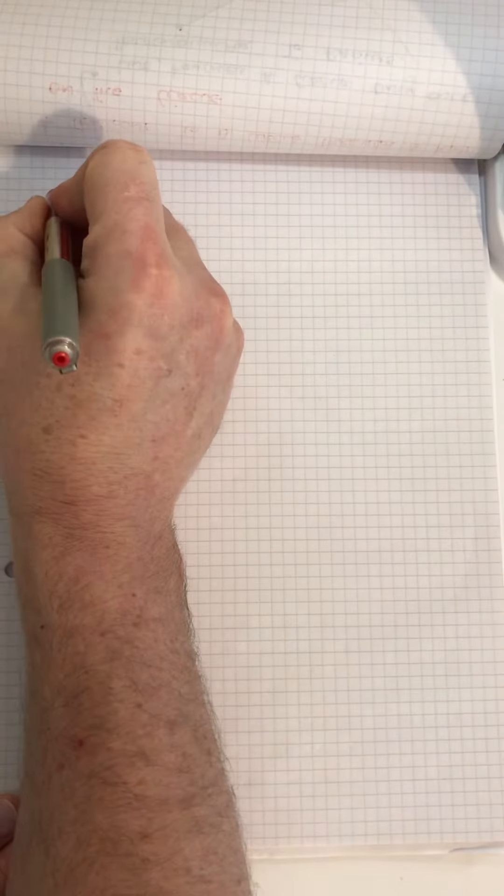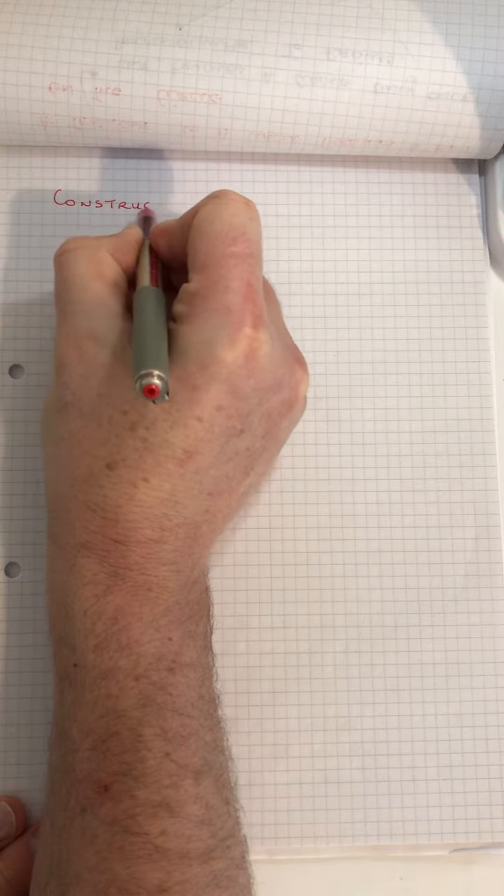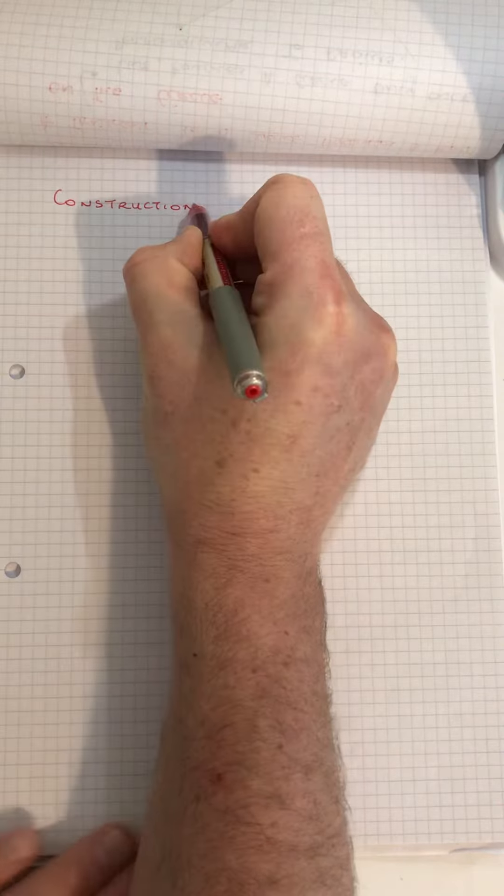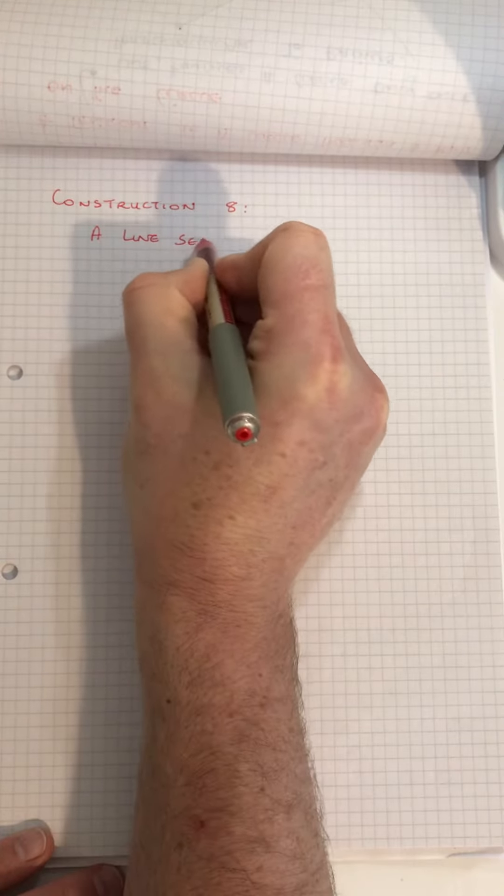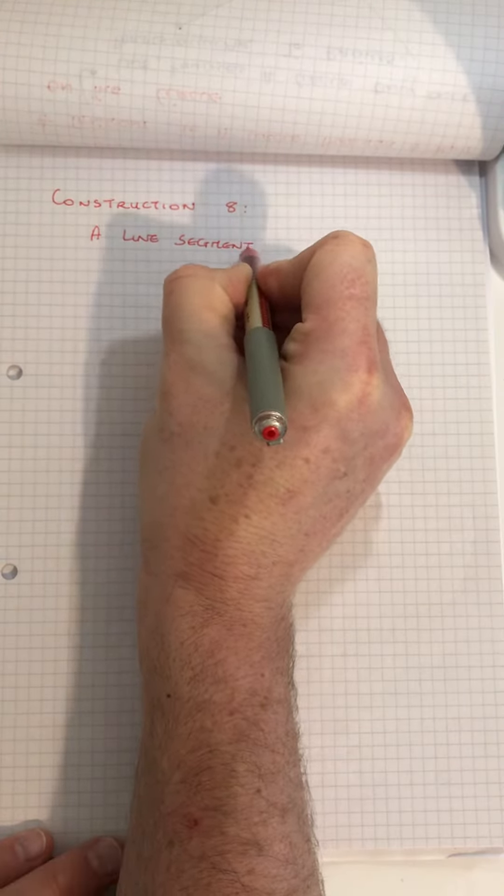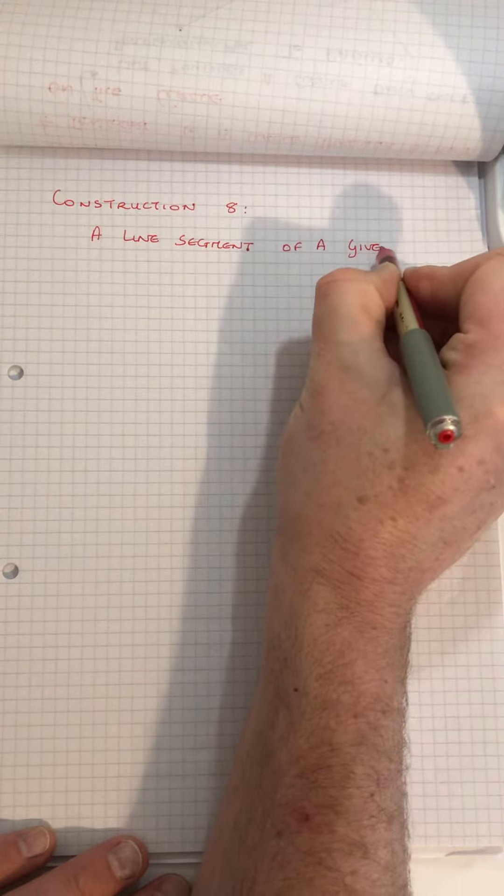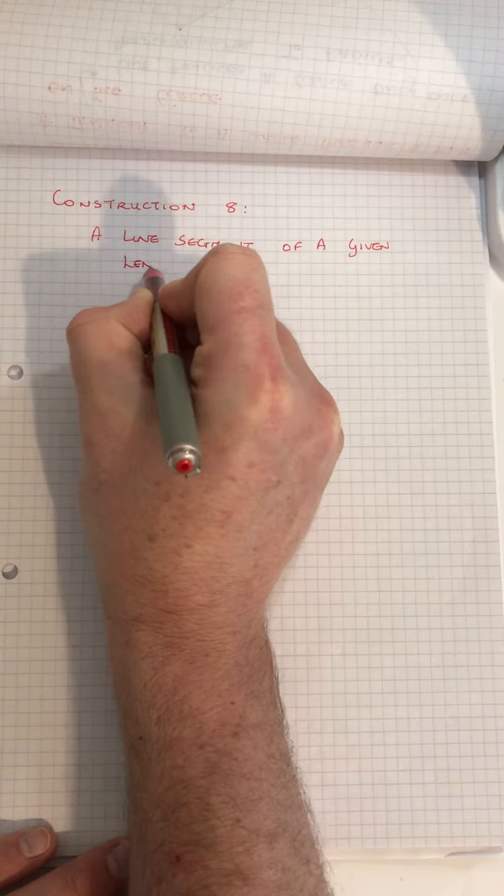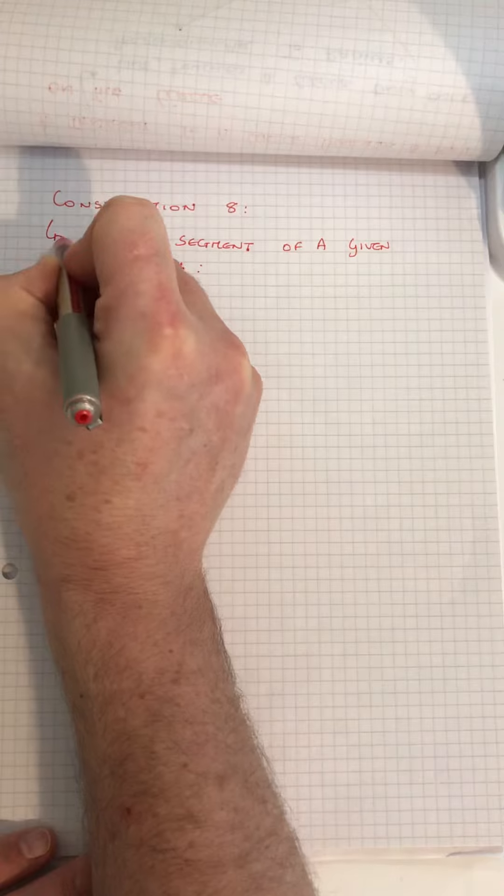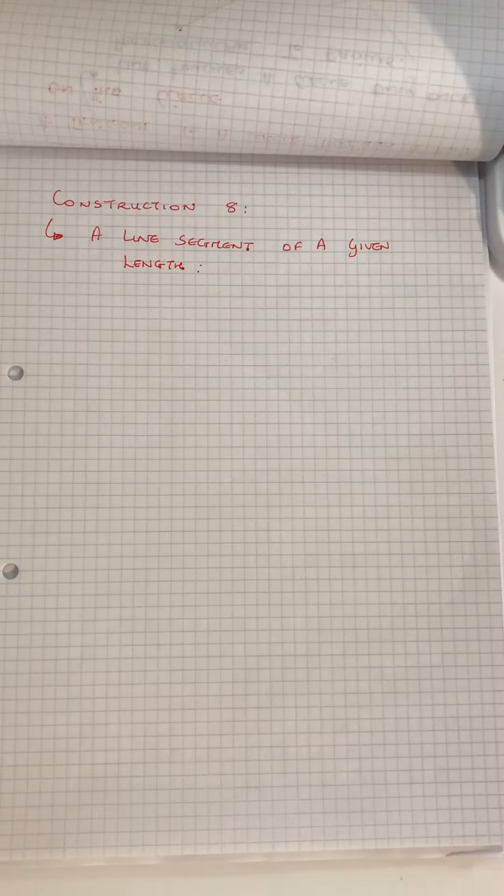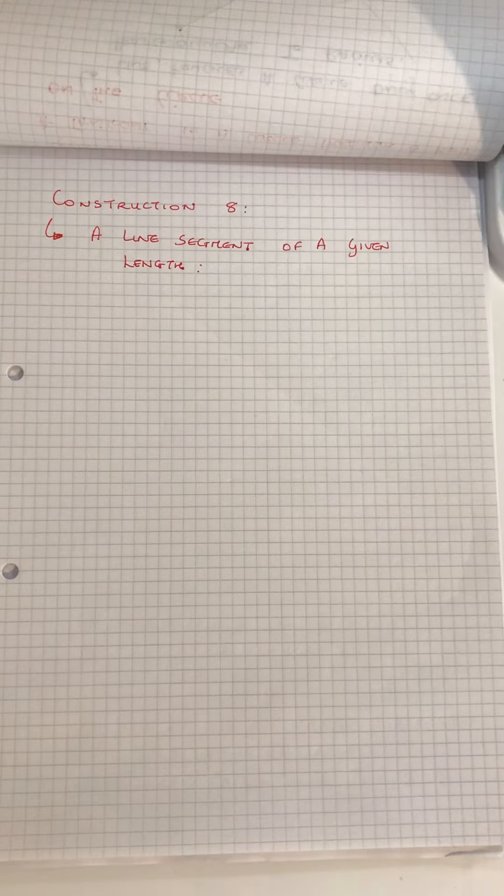Construction number eight: a line segment of a given length. That's the construction we just want to draw. The key here is you have to copy the line.